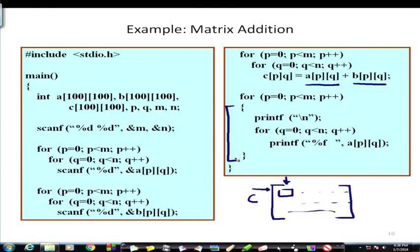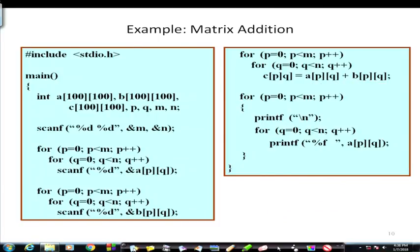The last for loop prints the result matrix. Note that it uses backslash-n so after each row the output moves to a new line, printing the matrix in proper visual form. This is a very useful and simple application of our knowledge of 2-dimensional arrays.